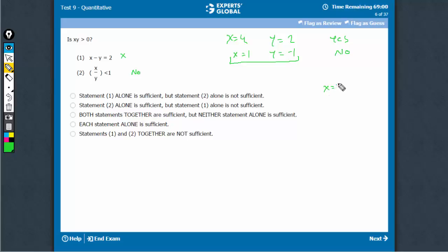For example, x is equal to 2 and y is equal to 5. This possibility would hold, but now, yes would be the answer. So, yes and no both are possible. So, this is also not sufficient.